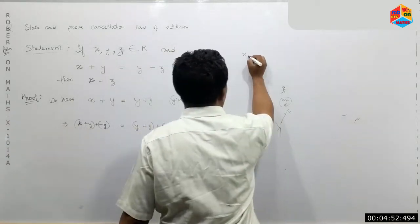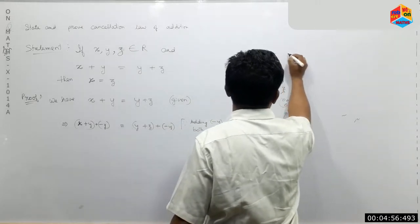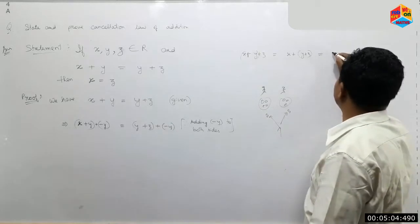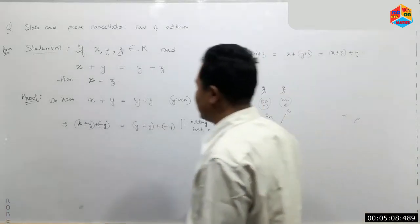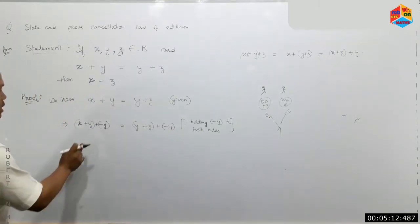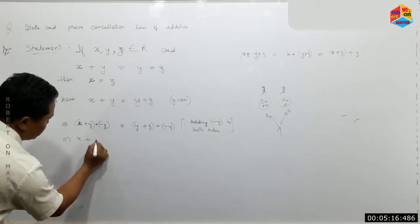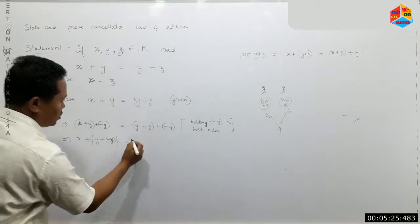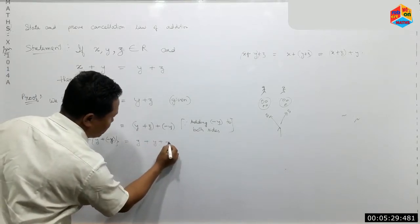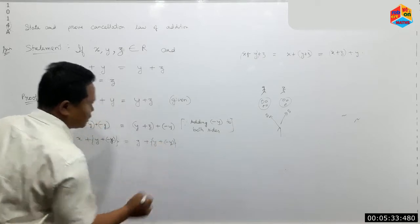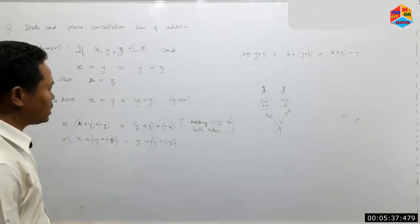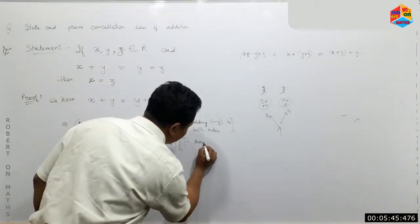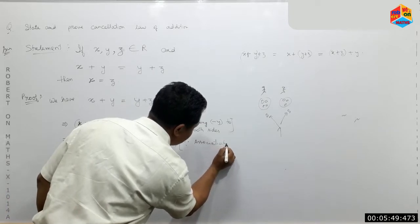We apply the associativity of addition. This allows us to regroup the terms: x plus y plus minus y on the left side, and x plus z plus minus y on the right side. By associativity of addition, we can rearrange the grouping.